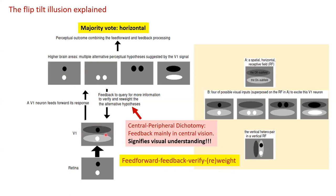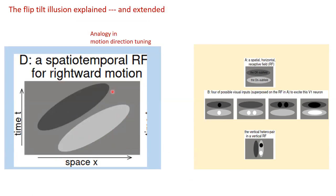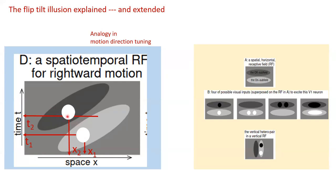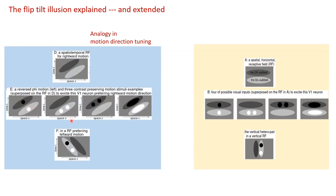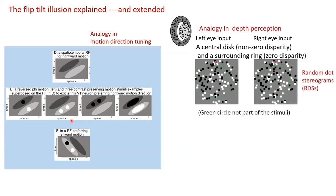This is the feedforward-feedback-verify framework — not my invention; Helmholtz and many others have discussed this kind of verification. This can be extended to motion: a direction-selective V1 cell tuned to rightward motion is excited by a dot moving right at time t1 then x2 at time t2. If you flip the polarity to a black dot, you get reverse-phi motion, and people do see that reverse-phi illusion.